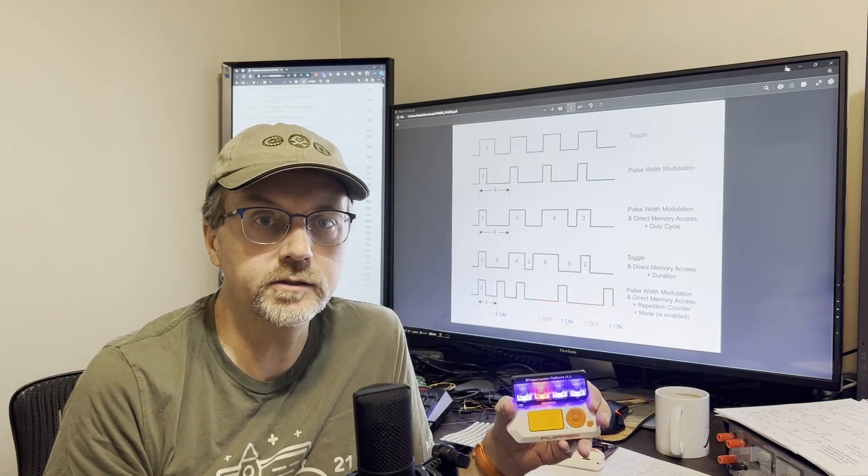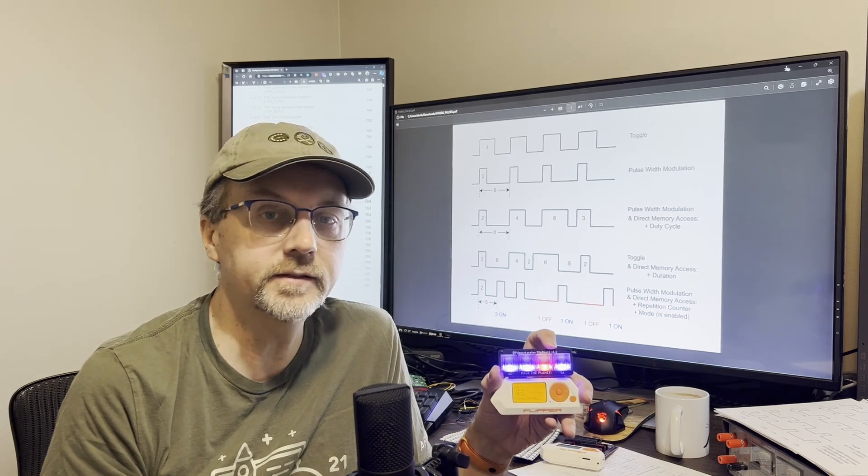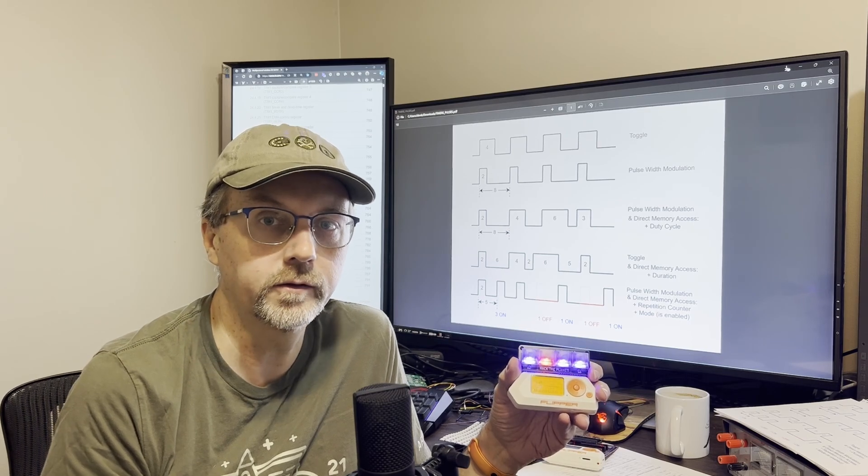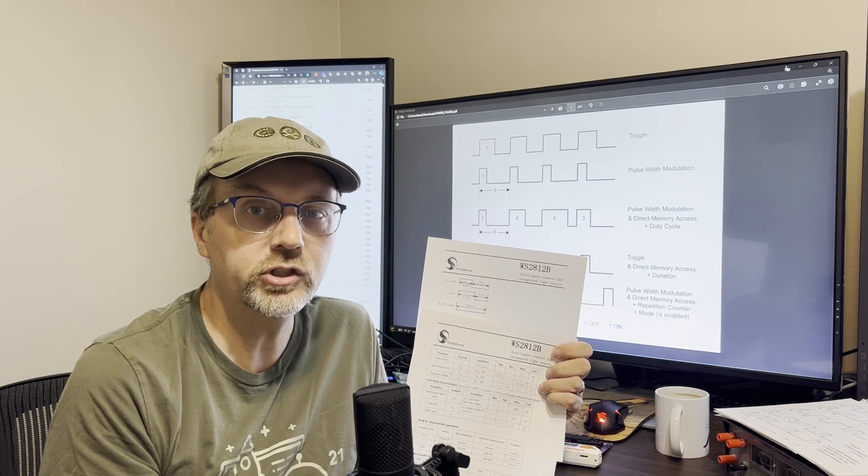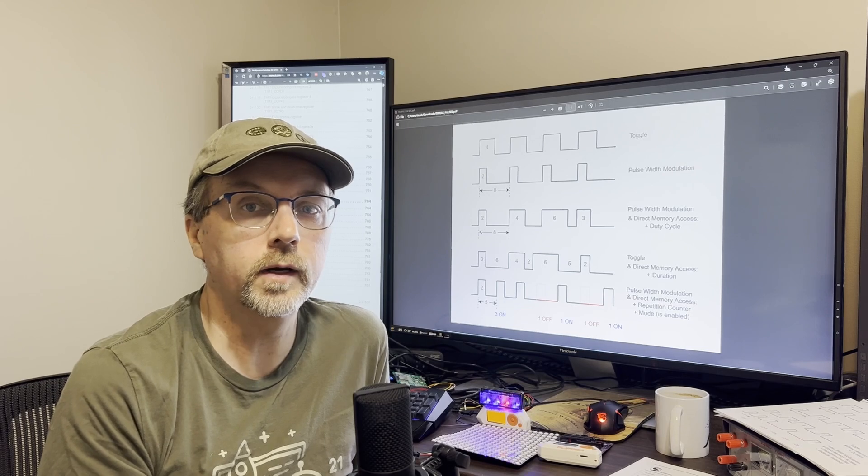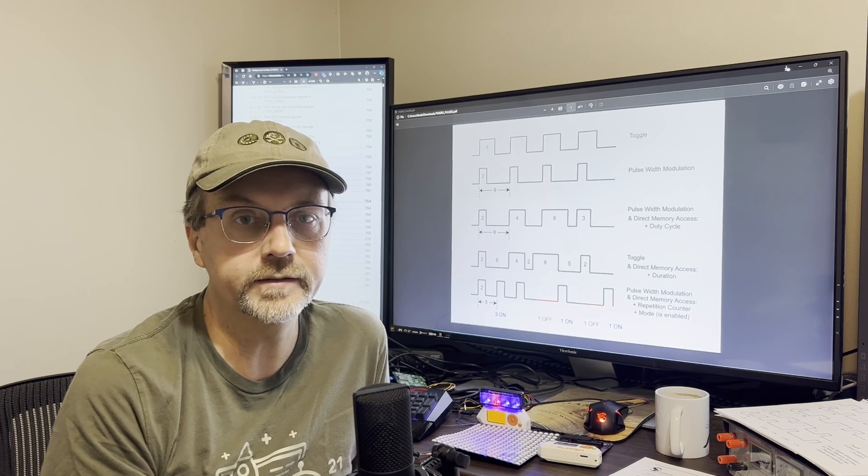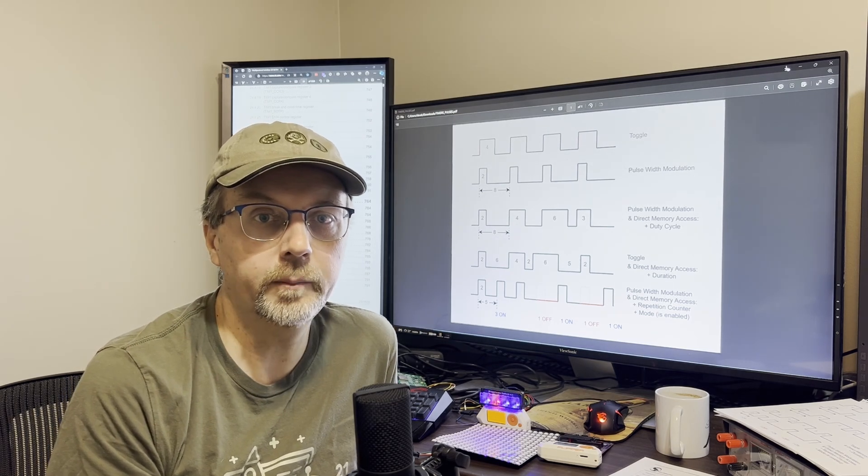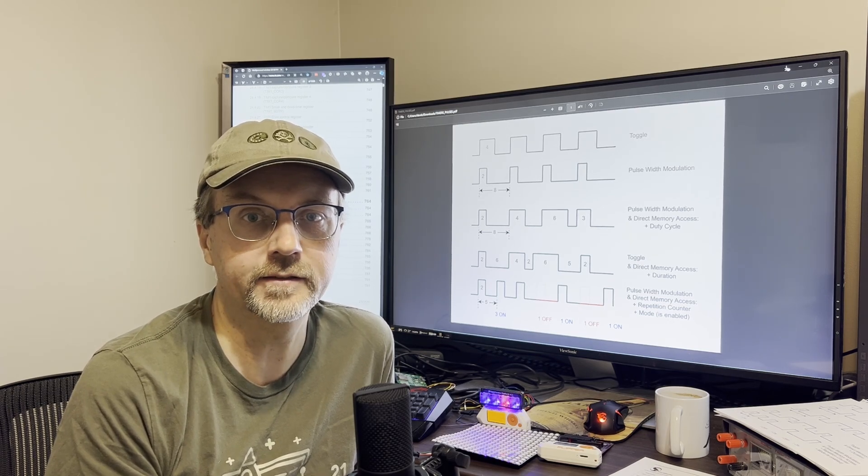But sometimes you come across a custom protocol that the Flipper doesn't support, such as the lights in the Flipboard, or in your backlight modification if you've done one of those. Those devices usually have a datasheet that explains all the different timing. In today's video, we're going to learn how to create different signals, like the ones you see behind me. This video isn't a coding video, it's just covering the concepts. In a few weeks, I'll make a video that talks about the code we need to implement on the Flipper Zero. Let's get started.